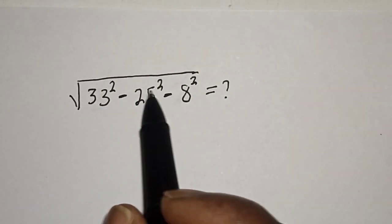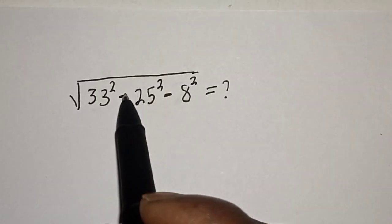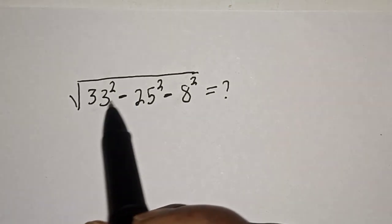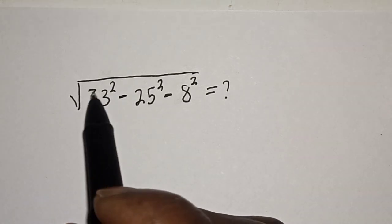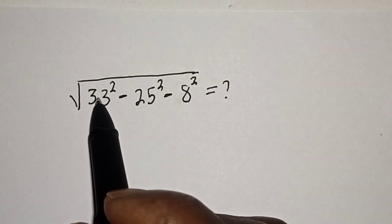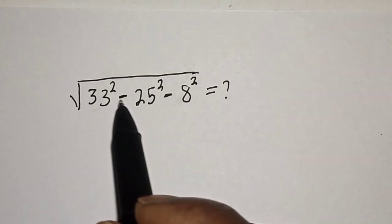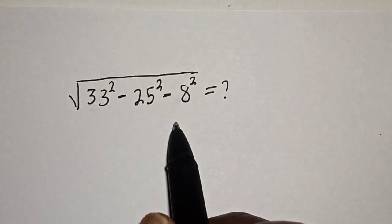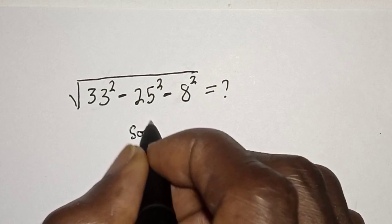Hello, welcome to Magis. In this class we want to simplify this nice math problem: square root of 33 squared minus 25 squared minus 8 squared is equal to what. Please like, share, comment and subscribe. Solution.